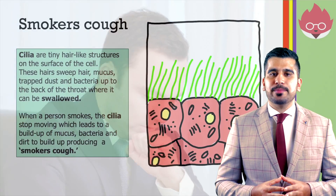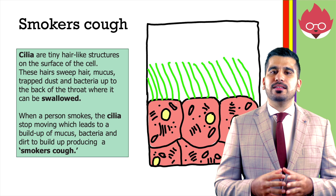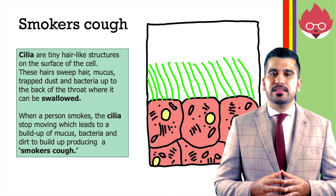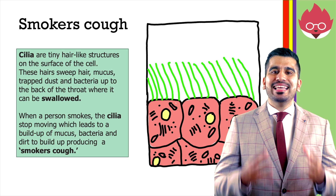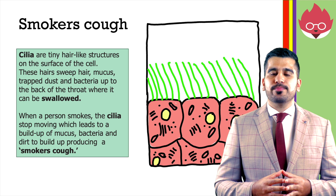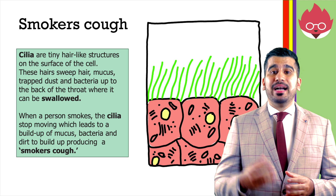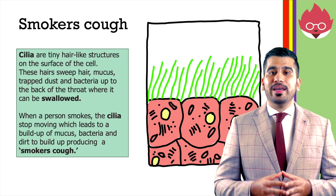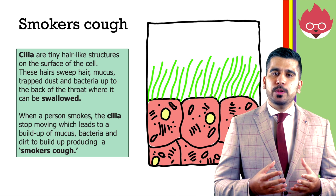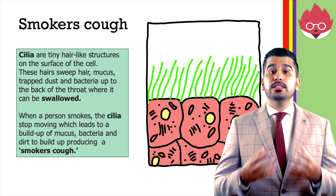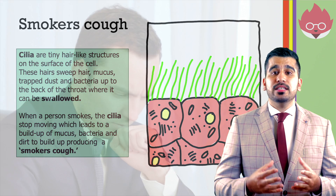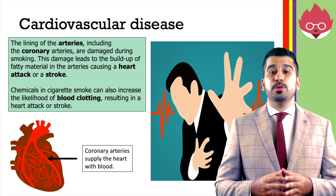People who smoke will develop a smoker's cough. To understand how this happens, we need to look at our respiratory system. If we zoom in, we can see specialised cells called ciliated epithelial cells. These are cells with tiny hair-like structures on their surface. These hairs sweep mucus, trap dust and bacteria up to the back of the throat, where it can then be swallowed. When a person smokes, the cilia stop moving, and this leads to a buildup of mucus, bacteria, and dirt. Smokers therefore develop a cough to manually move mucus around their respiratory system, which we refer to as the smoker's cough.